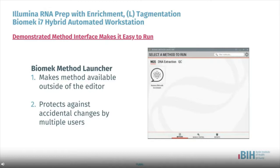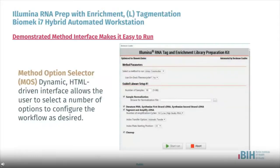The Illumina RNA Prep with Enrichment demonstrated method is designed to run with Biomek Method Launcher, a user interface that allows users to run Biomek methods outside of the Biomek 5 Method Editor software. This protects against unintended or accidental changes by multiple users while preparing to run methods. Run parameters are defined using the method options selector, a dynamic HTML-driven interface that allows users to select parameters such as number of samples, use of the automated thermocycler, which indexes to use, and method start and stop points. Parameters that would create an error state will display an error and not allow the user to proceed.